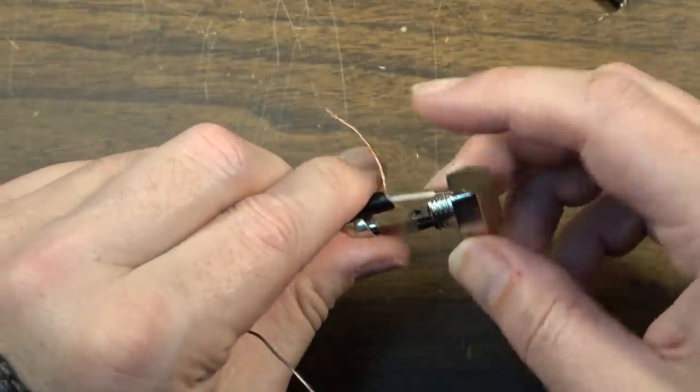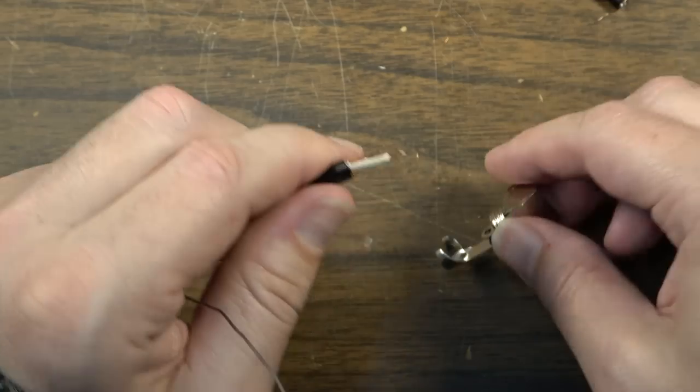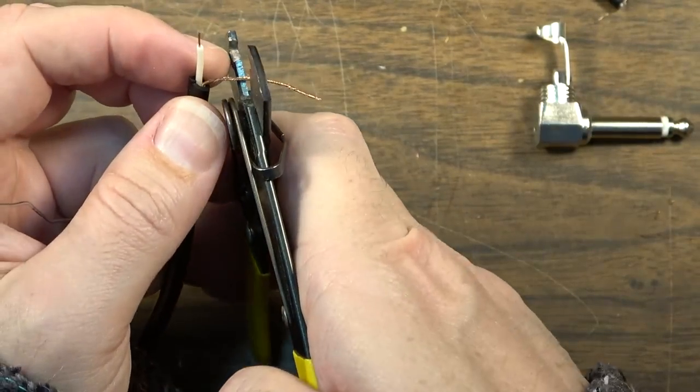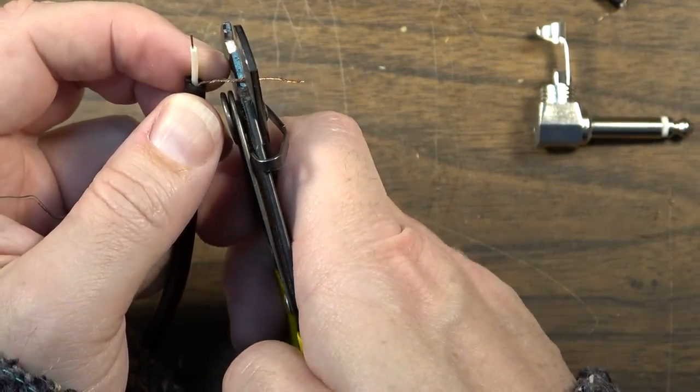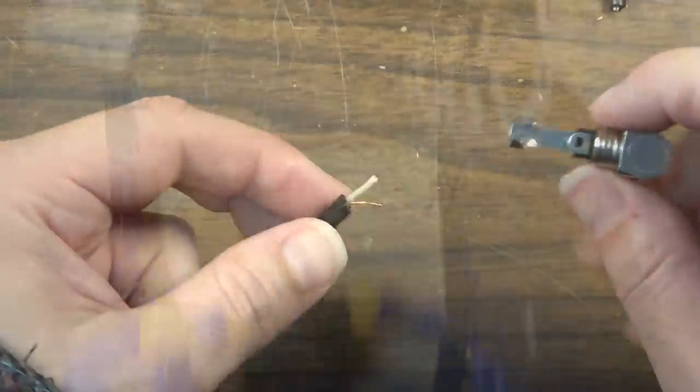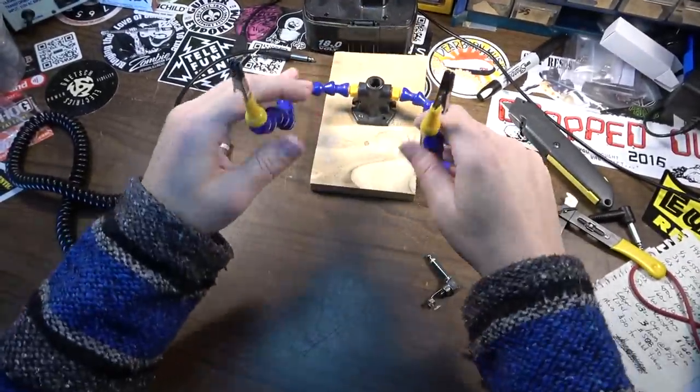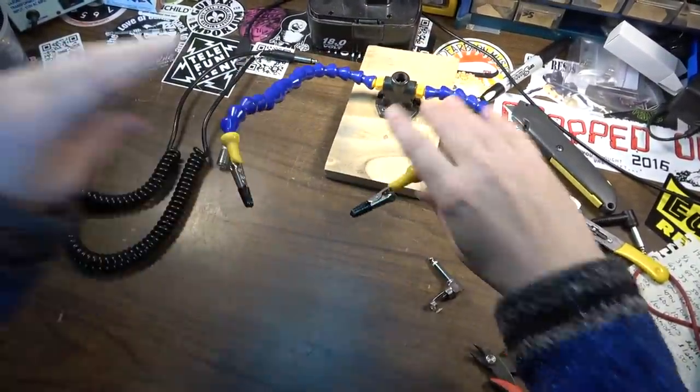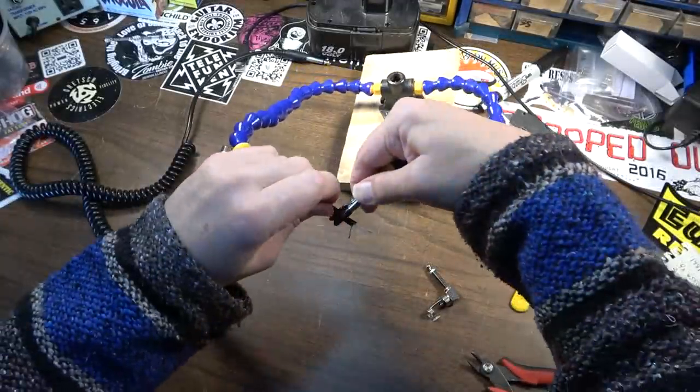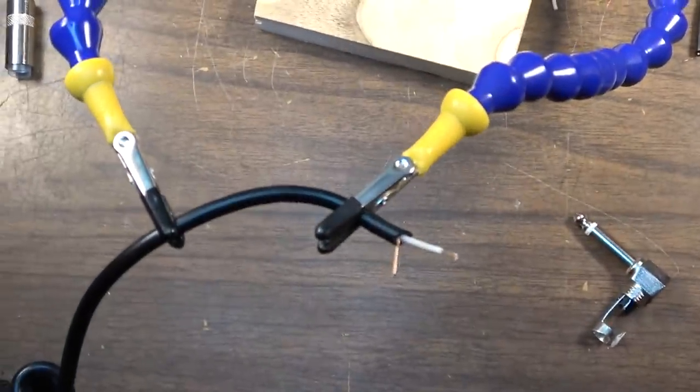Now we need to strip back some of the insulator wire. We don't need all this much of it. So we'll cut it down maybe about that much. It's always nice to have something like this. This is a helping hand. So I can put the cable like so and kind of clip it up so it'll be held there. Makes it a lot easier to deal with.